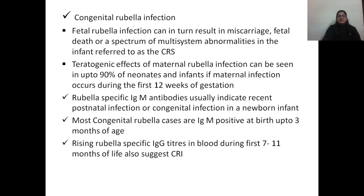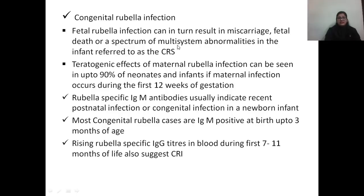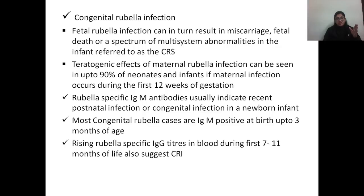Congenital rubella infection causes significant morbidity in newborns and occurs if the primary rubella infection happens during the first 12 weeks of gestation. It is characterized by multi-system abnormalities and can result in miscarriage or fetal death. To prevent congenital rubella syndrome, vaccination for rubella has been introduced, given along with measles and mumps as the MMR vaccine. Many states in India are now administering MMR vaccine to reduce the incidence of congenital rubella syndrome.